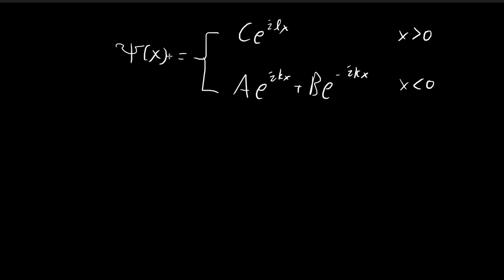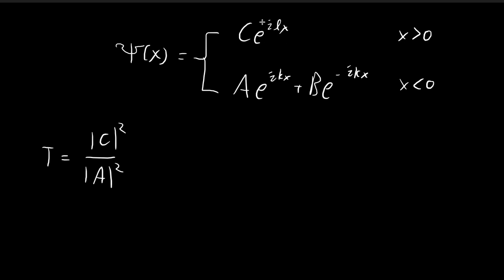Under normal circumstances, in all the examples we've done so far, when we're looking for the transmission coefficient, all we would do is take this constant c, apply the absolute value squared, and then divide it by the absolute value of a squared. This would represent the wave traveling beyond the barrier, and this would represent the wave traveling towards the barrier. But you should notice that the waves are actually traveling at different speeds within these two regions. Once you reach the region x greater than 0, you have a potential which would affect the speed of the wave, and that's why this formula isn't entirely correct for this case.